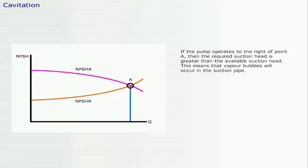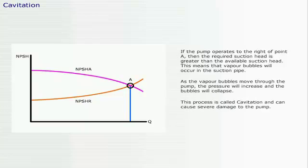If the pump operates to the right of point A, then the required suction head is greater than the available suction head. This means that vapor bubbles will occur in the suction pipe. As the vapor bubbles move through the pump, the pressure will increase and the bubbles will collapse. This process is called cavitation and can cause severe damage to the pump.